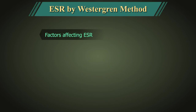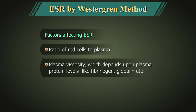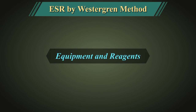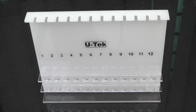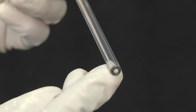Other factors which affect sedimentation include the ratio of red cells to plasma, the plasma viscosity, the bore of the tube, equipment and reagents. Equipment required: Westergren rack, Westergren tubes with internal diameter of 2.5 mm.